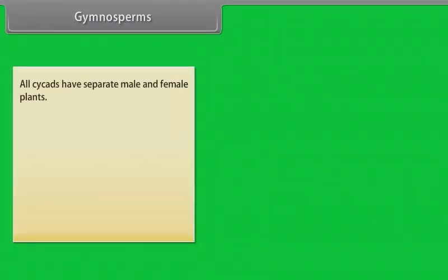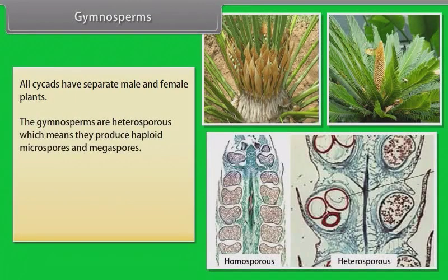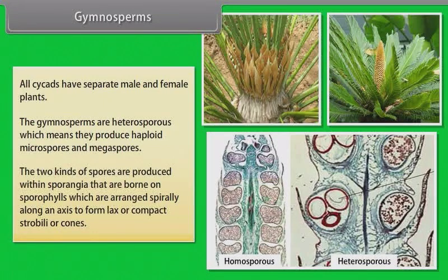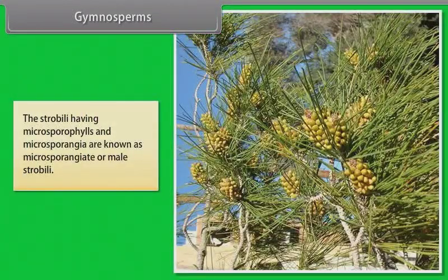All cycads have separate male and female plants. The Gymnosperms are heterosporous, which means they produce haploid microspores and megaspores. The two kinds of spores are produced within sporangia that are borne on sporophylls which are arranged spirally along an axis to form lax or compact strobili or cones. The strobili having microsporophylls and microsporangia are known as microsporangiate or male strobili.